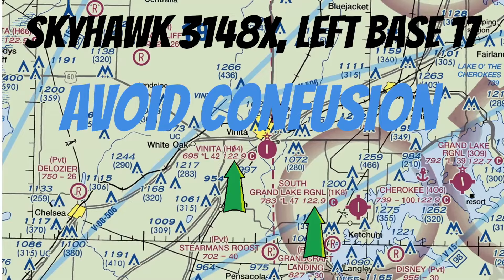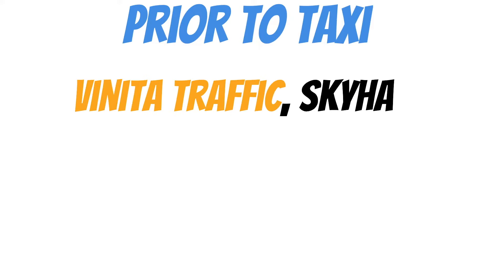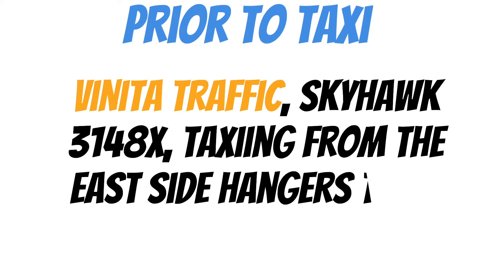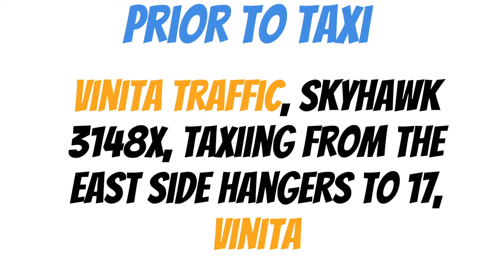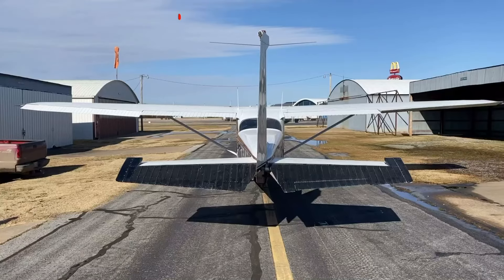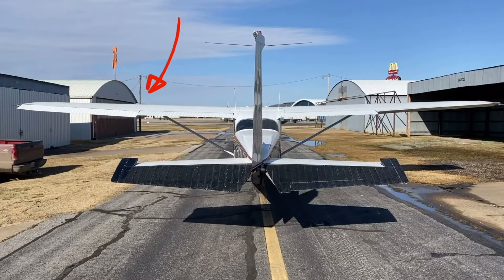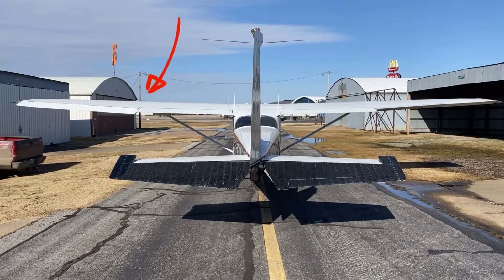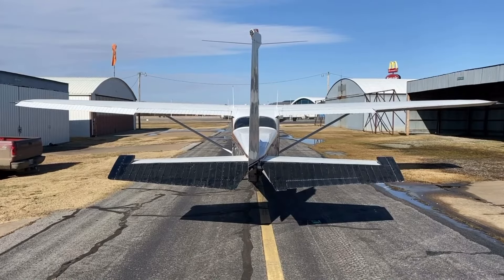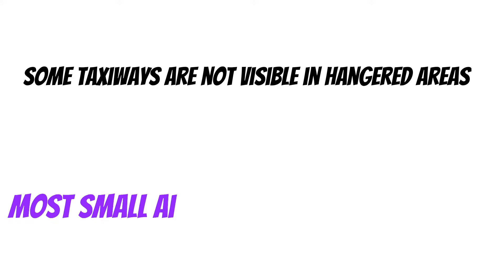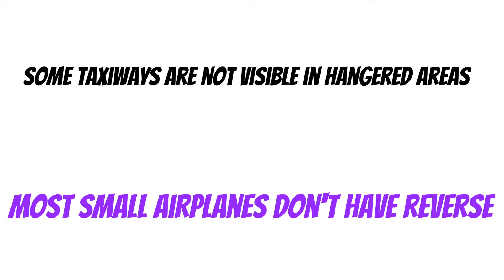The first recommended radio call we should be making at non-towered airfields is prior to taxi, and that might sound something like this: 'Veneta traffic, Skyhawk 3148 X-ray, taxiing from the east side hangars to 17, Veneta.' While this might seem like the least important of the recommended radio calls, some taxiways are not visible in the hangared areas. A radio call might keep someone from whipping around that corner. And remember, small airplanes don't have reverse.